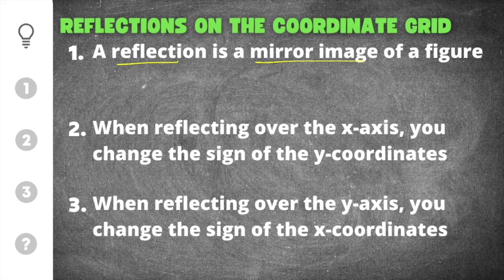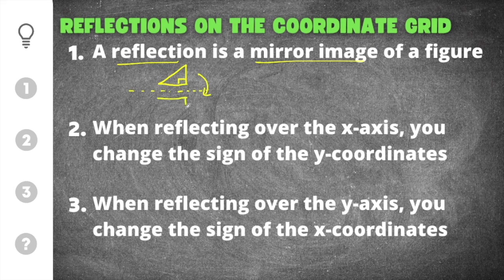You can reflect over the x-axis or the y-axis. The x-axis is the horizontal axis. I'm going to draw a triangle here, and this is going to be reflected across the x-axis. When it's reflected, it's going to create a mirror image across the axis on the other side.